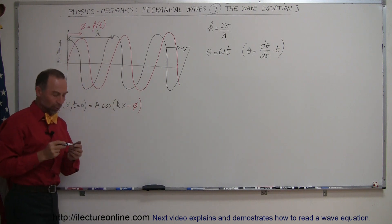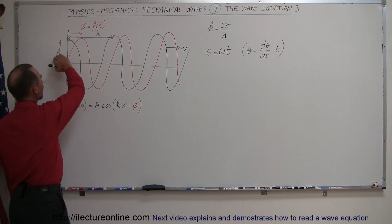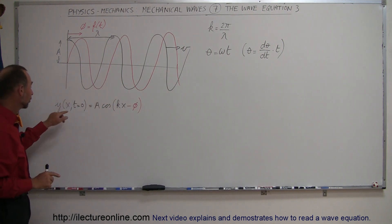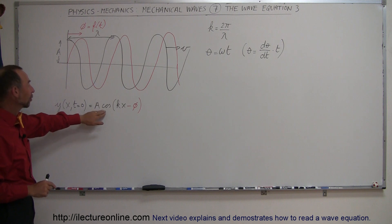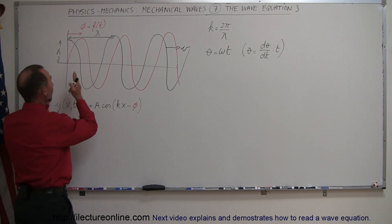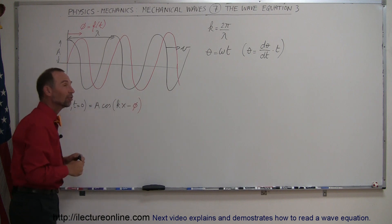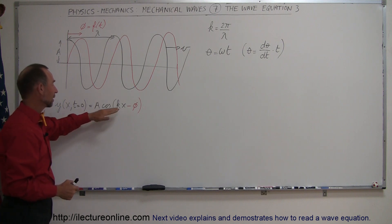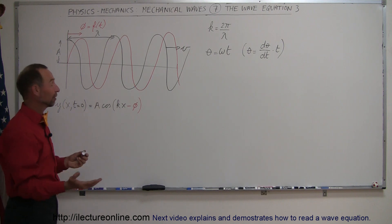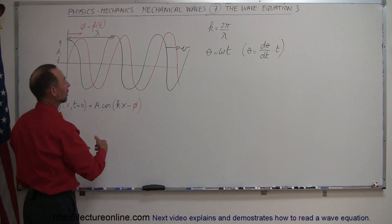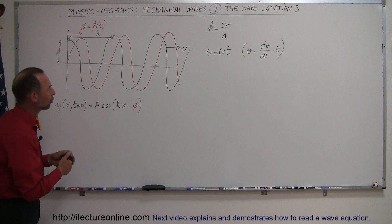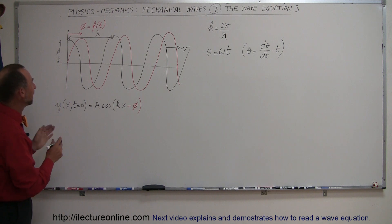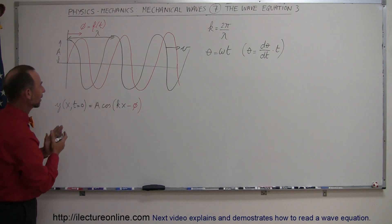In the previous video we looked at the phase shift. The black line represents a wave that's stationary, so time is equal to zero — it's only a function of x, and that was y = A cos(kx). If we had a phase shift to the right, we adjust the equation by introducing that phase shift inside the cosine. We showed that if the phase shift was pi over 2, a quarter of the wave, everything shifted over by 90 degrees.